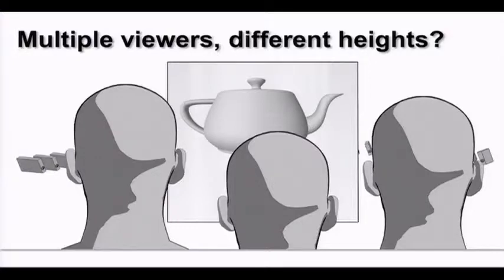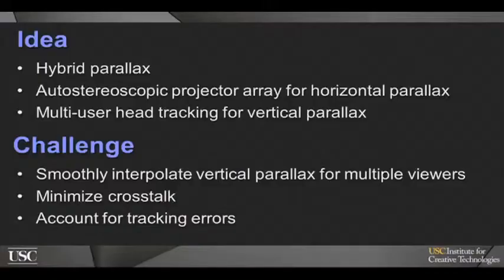So our solution is to try and have a hybrid technique where we use autostereoscopic horizontal parallax. However, we combine it with user tracking of multiple users in order to dynamically update the vertical parallax for each viewer's position. And this is possible because each viewer is, in effect, receiving their own customized view going with these angularly varying pixels.